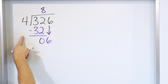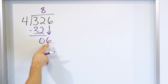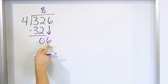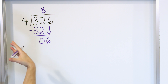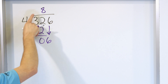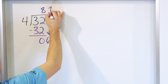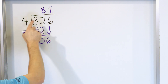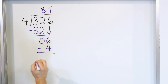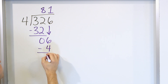I ask myself: 4 times something is 6. Notice that this 6, after I've subtracted and dragged down, is bigger than 4, so I'm not done yet. 4 times 1 is 4, and 4 times 2 is 8 — that's too big. So I go back to 4 times 1 being 4. I multiply, 4 times 1 is 4, and subtract. 6 minus 4 is 2.